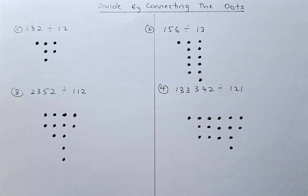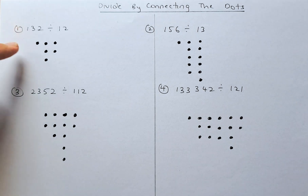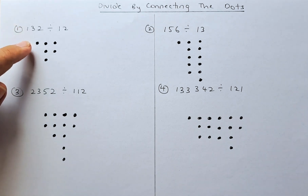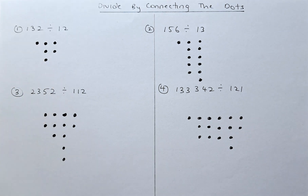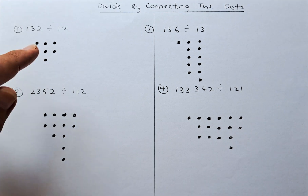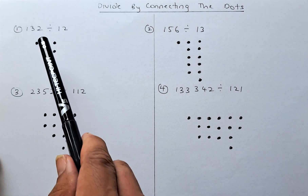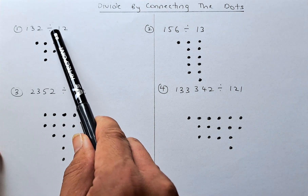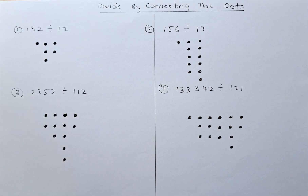The first one is 132 divided by 12. For 132, you draw one dot, followed by three dots, and two dots. Now we're going to connect the dots when we divide by 12. You need to divide the first column by one dot and the second column by two dots.